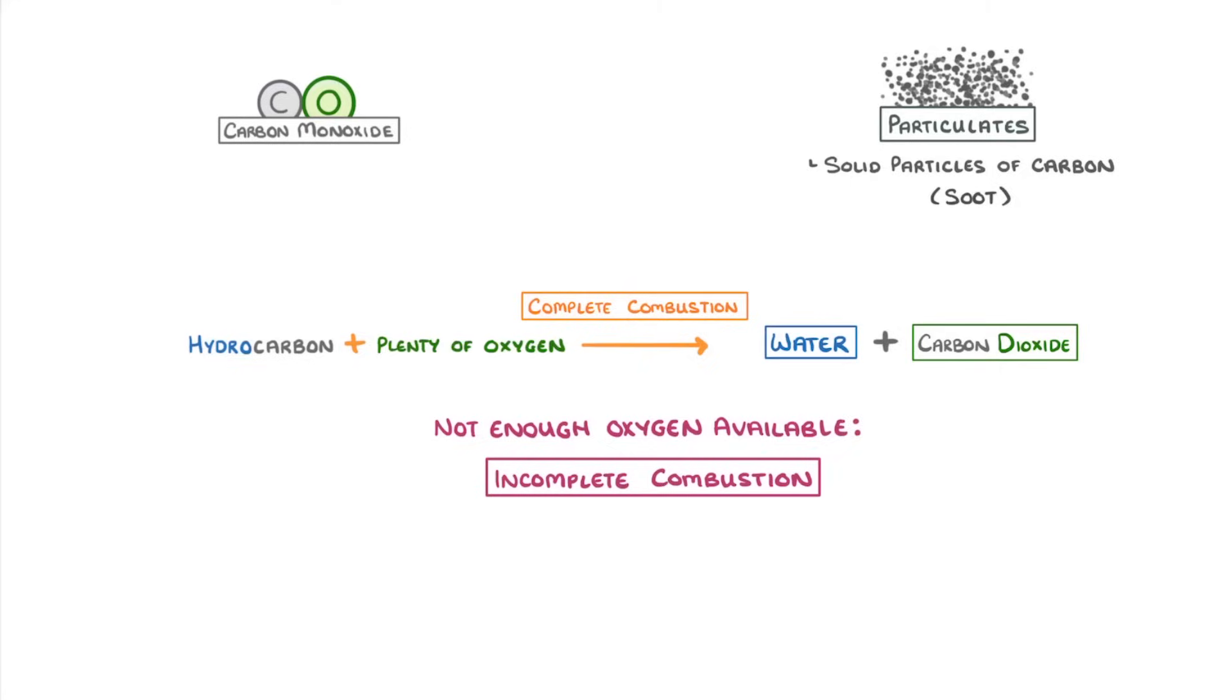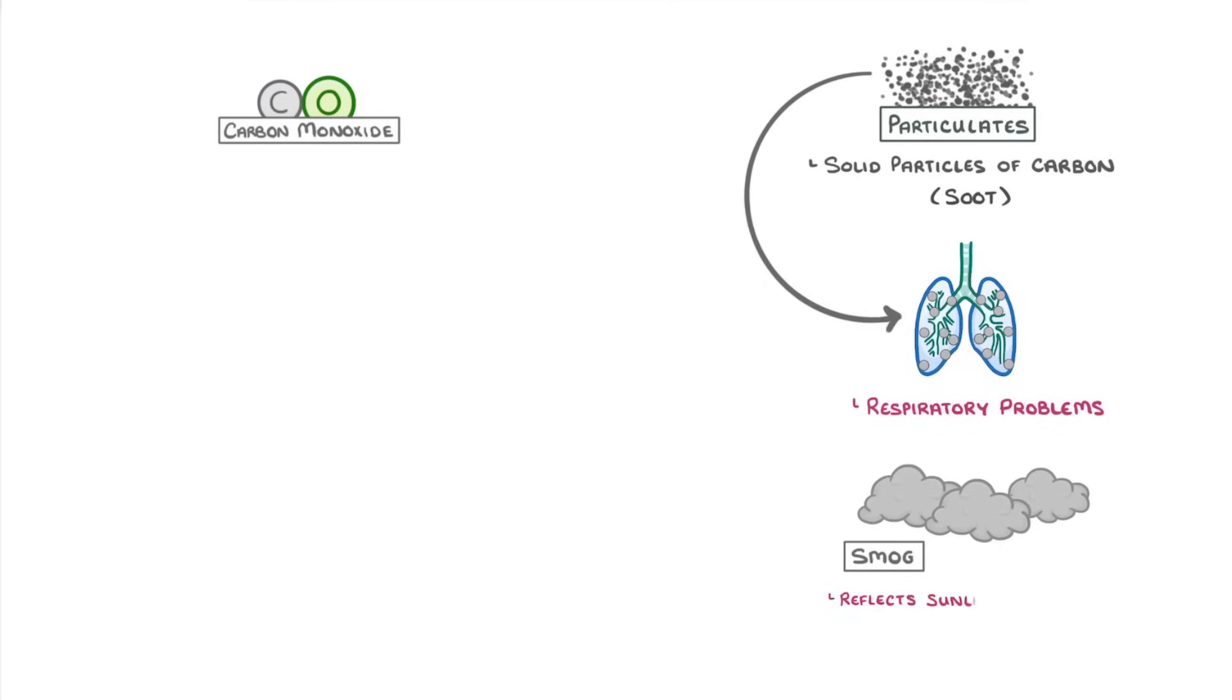If we start with particulates, there are two main problems to be aware of. The first is that if they're inhaled, they can get stuck in your lungs and damage them, which can lead to respiratory problems. The second issue is that they can form dark clouds or smog, which reflects sunlight back into space. And this means that less light reaches the earth, which we call global dimming.